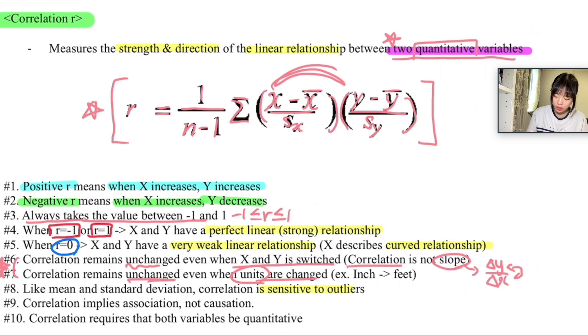And also, correlation implies association, not causation. I think this is one of the most important things and frequently asked parts. So correlation implies association, not causation. Even if r is equal to minus 1 or r is equal to 1, you can't say that there is a perfect causational relationship between x and y, but you can still say that there is a strong association between those two, but that does not justify the cause and effect relationship.